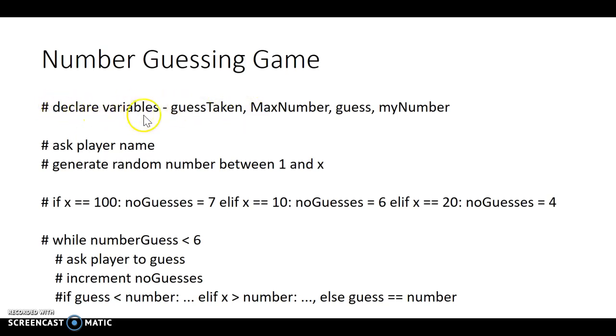I also need to declare variables and what variables do I need? I need some sort of tracker to keep track of the number of guesses that have been taken by the user. I need what my number is. I'm going to check like X. So am I guessing my game going to be 1 to 10, 1 to 20, 1 to 100, 1 to 1000 and so on. What the guess is and what my number is.